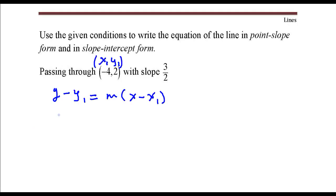You just have to substitute these values into this equation. y minus y1, that would be y minus 2, equals the slope, which is 3 halves, times x minus negative 4.